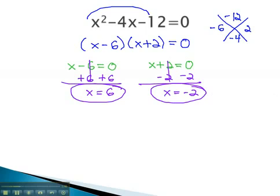These are the two numbers that, when plugged in for x in the original equation, will give us 0 for our final answer.